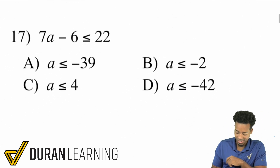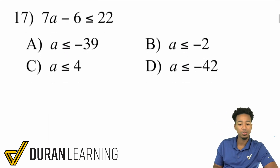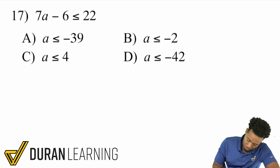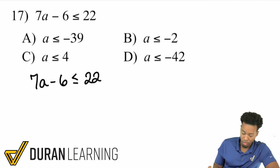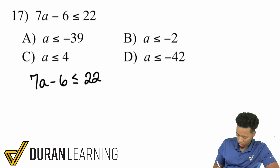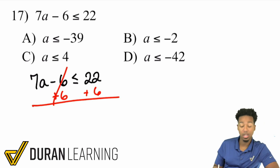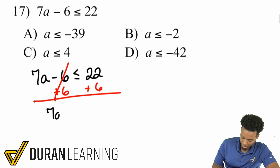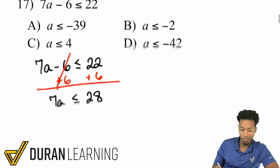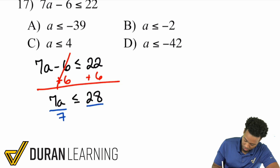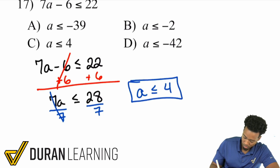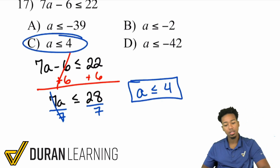Let's take a look at number 17: 7a minus 6 is less than or equal to 22. We have 7a minus 6 is less than or equal to 22. We'll start by adding 6 to both sides. That cancels out on the left, giving us 7a is less than or equal to 28. From here we divide both sides by 7, giving us a is less than or equal to 4. And there it is — C is your answer.